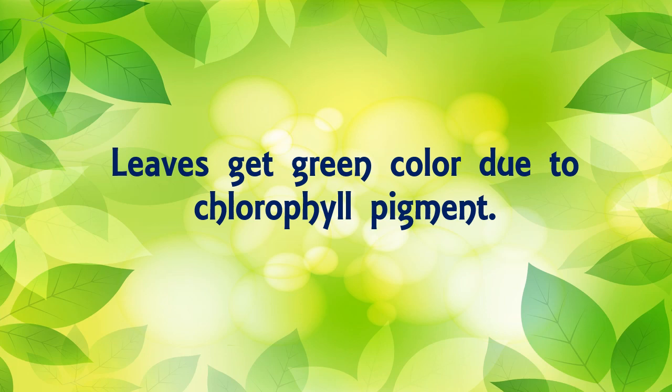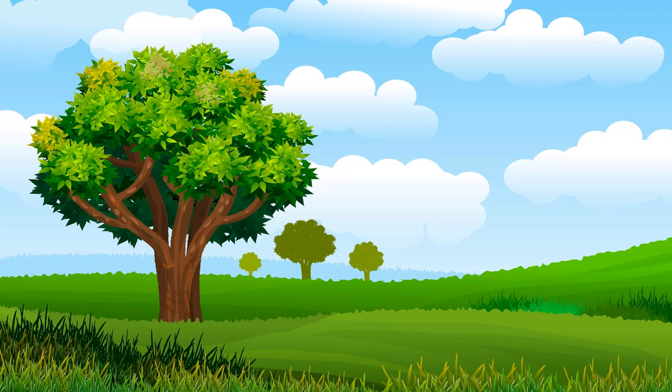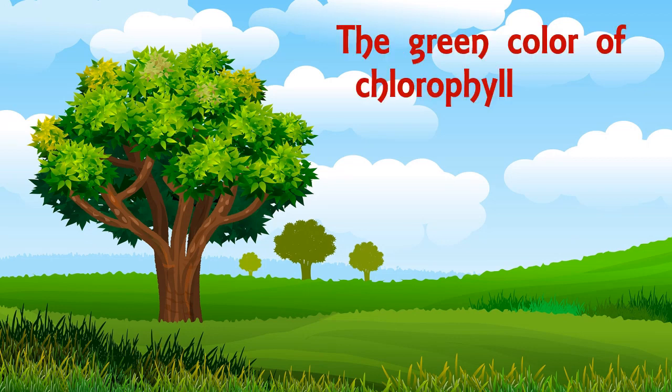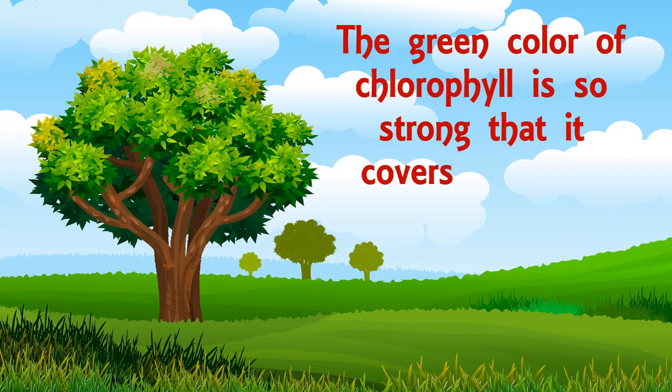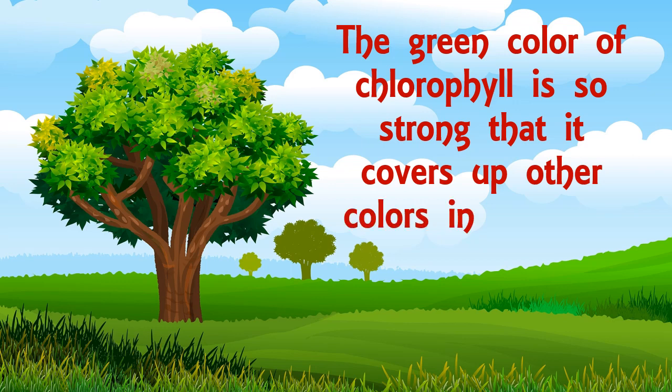Leaves get their green color due to the chlorophyll pigment present in them. The green color of chlorophyll is so strong that it covers up all the other colors in the leaves.